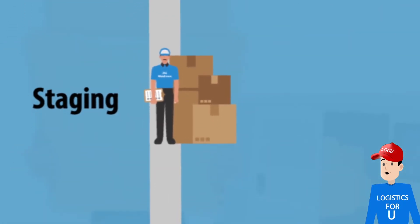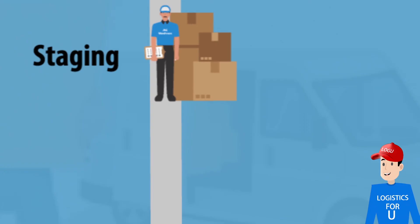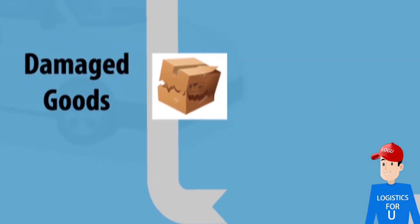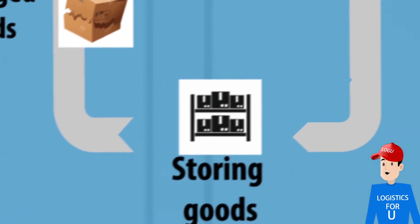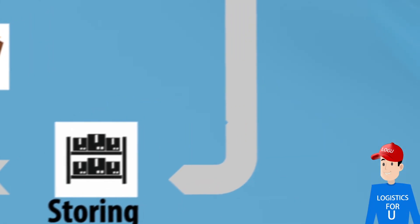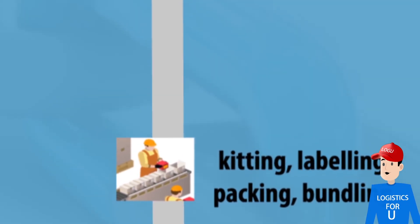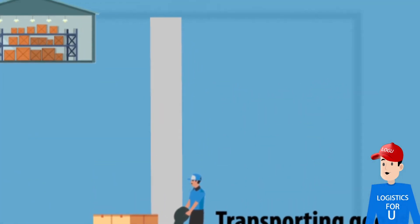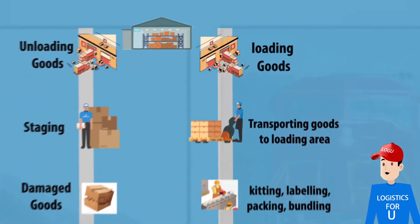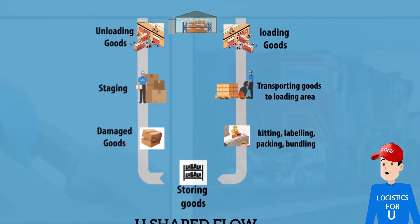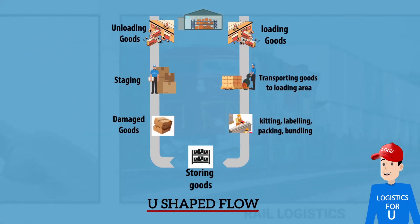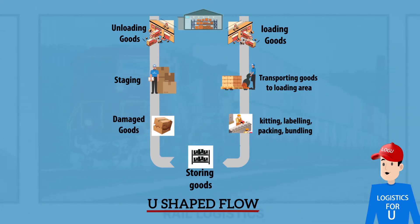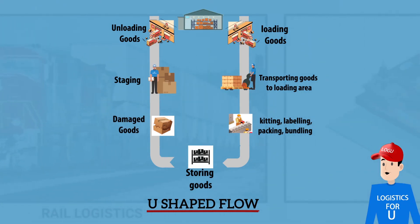U-shaped flow: The advantage of the U-shaped flow is that the dock's resources, which may include people, space, and equipment, are fully used as receiving and shipping happen on the same floor. Put away and retrieval can be combined. Security is enhanced as entry and exit happen at the same place.